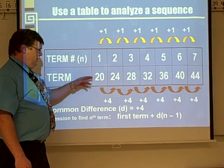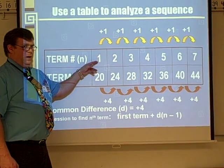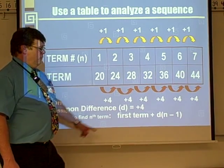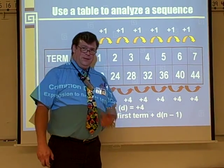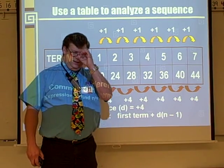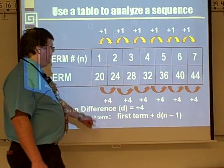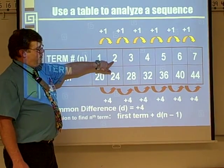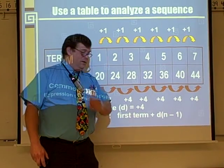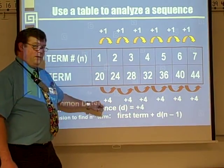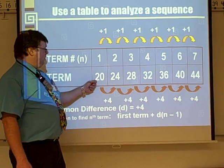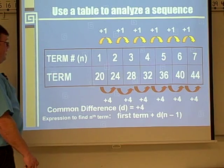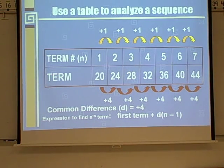Why minus 1? Well, for the first term, do I want to add the common difference to it? No. So when I plug in 1, 1 minus 1 gives you 0, multiply by the common difference gives you 0, and you get the first term alone. For the second term, plug in 2: 2 minus 1 is 1, times the common difference is 4, add that to the first term and you get 24. So you can find any term using that expression.